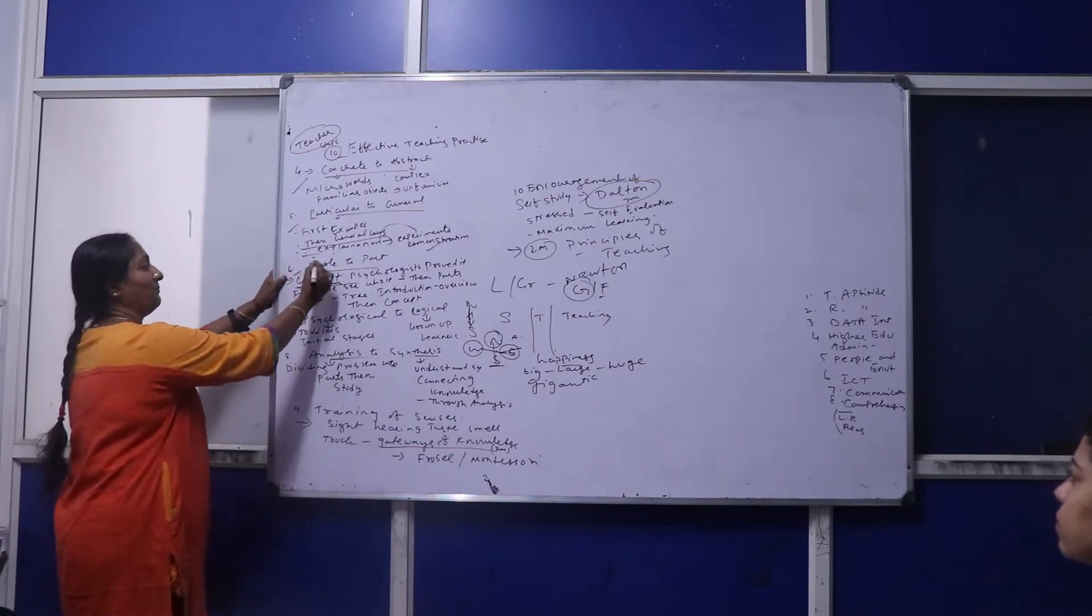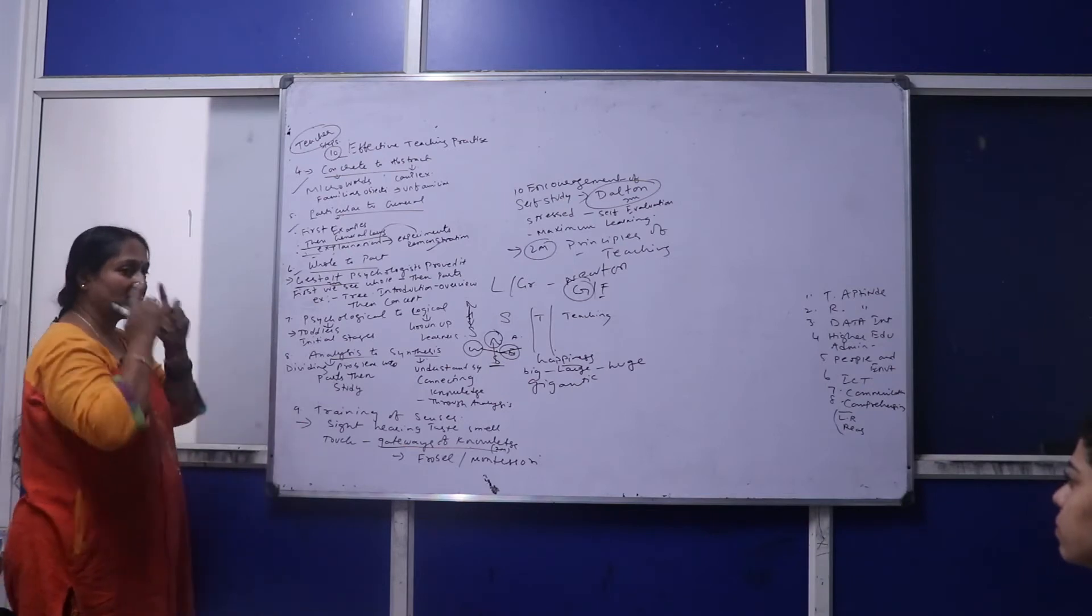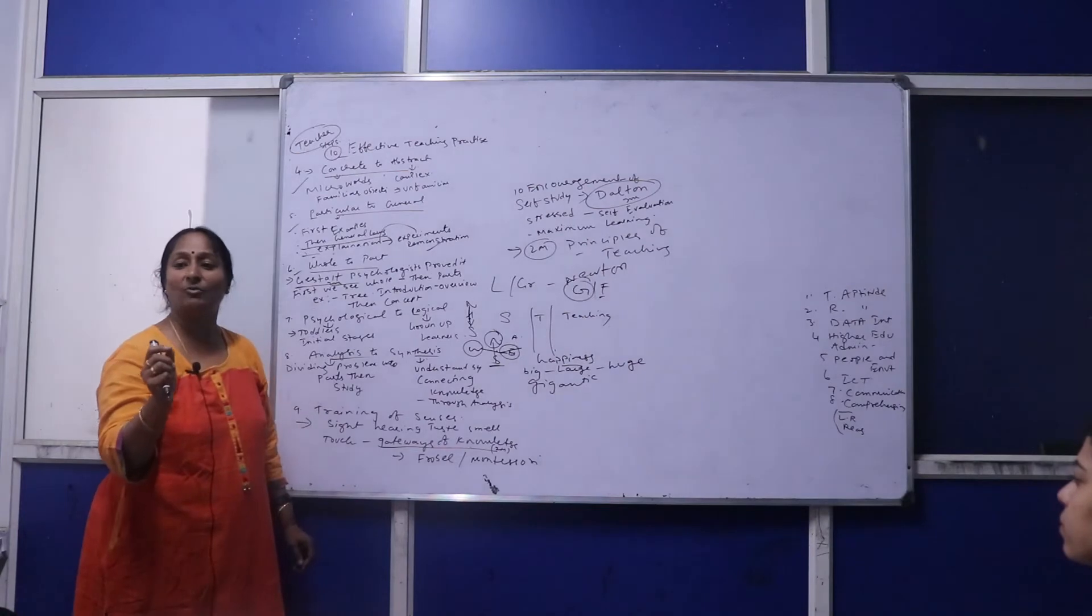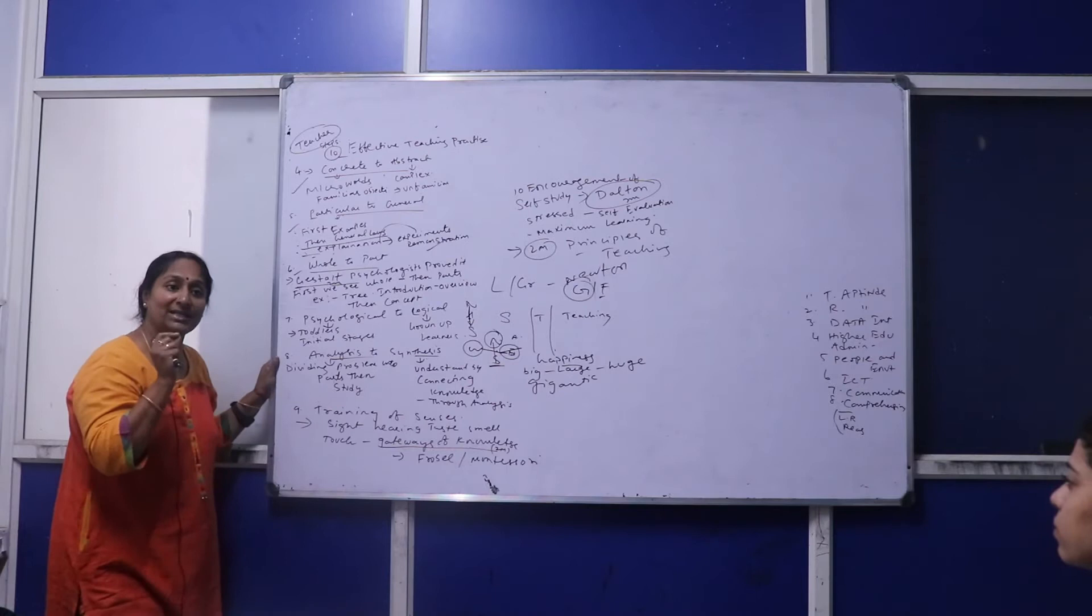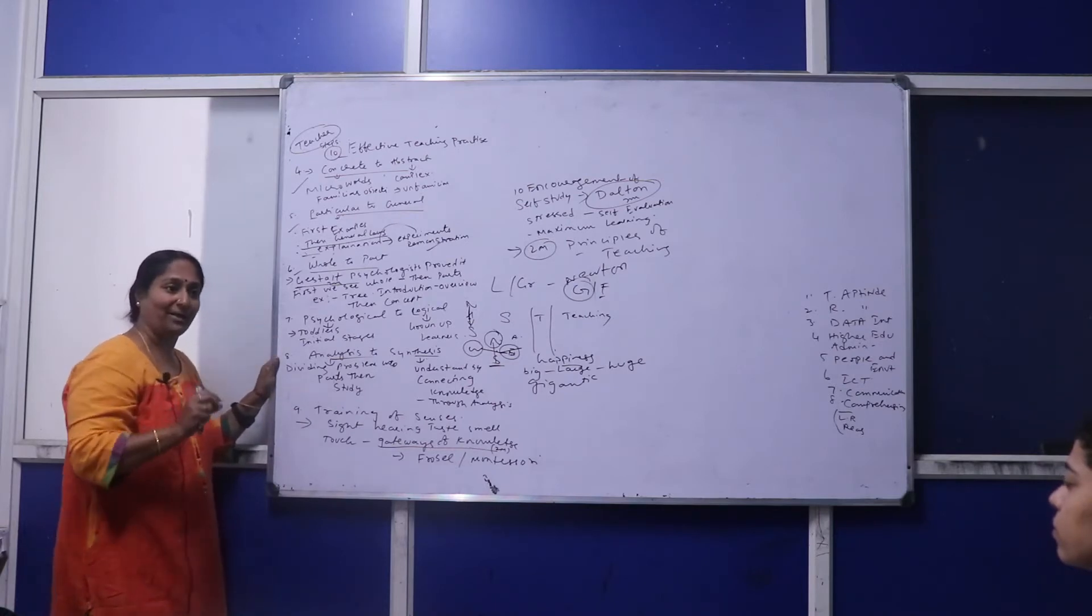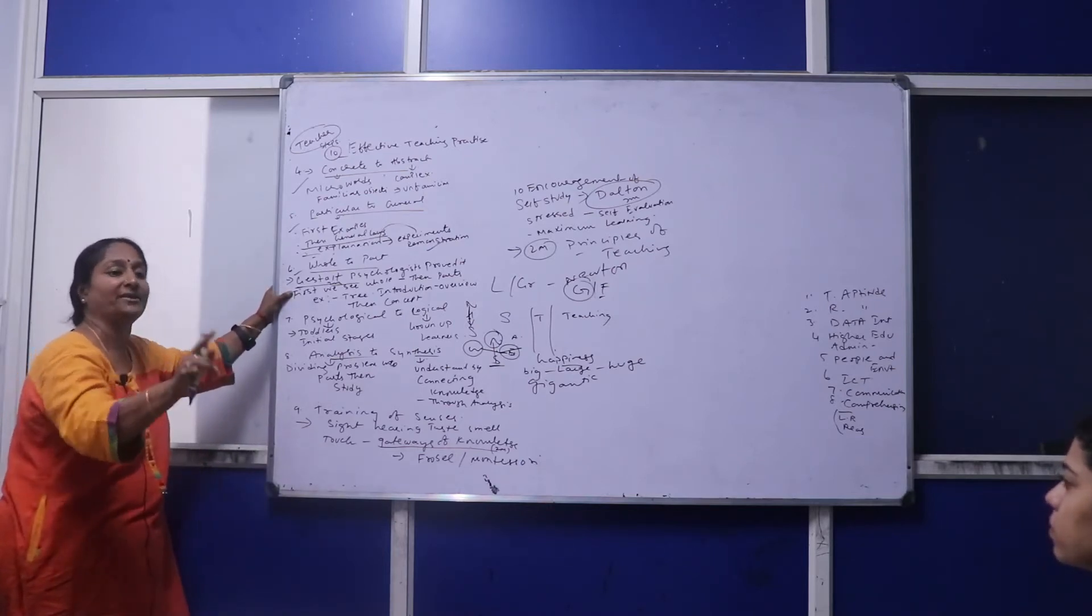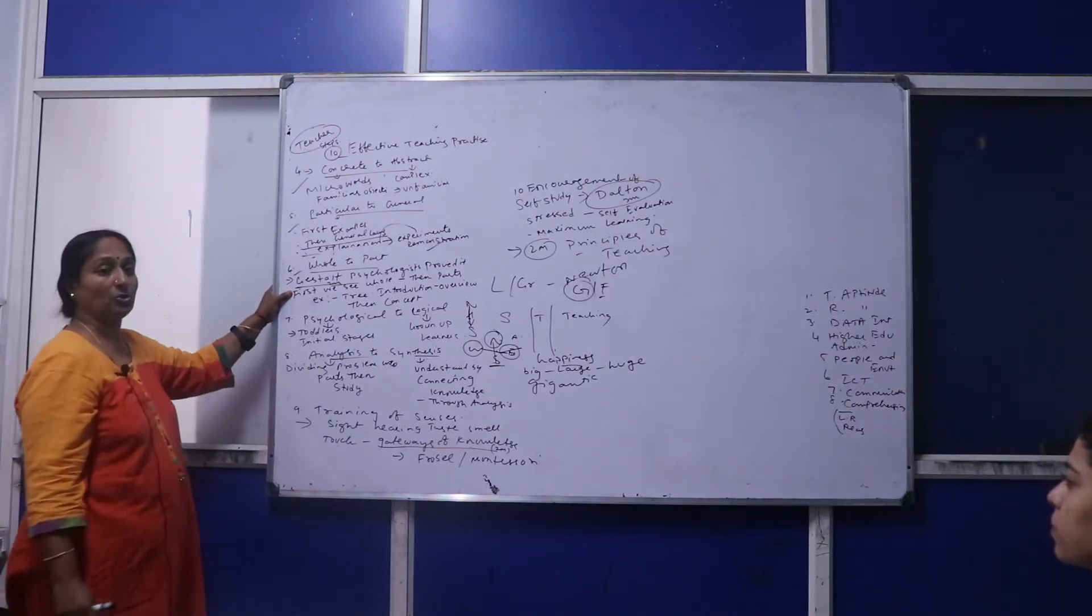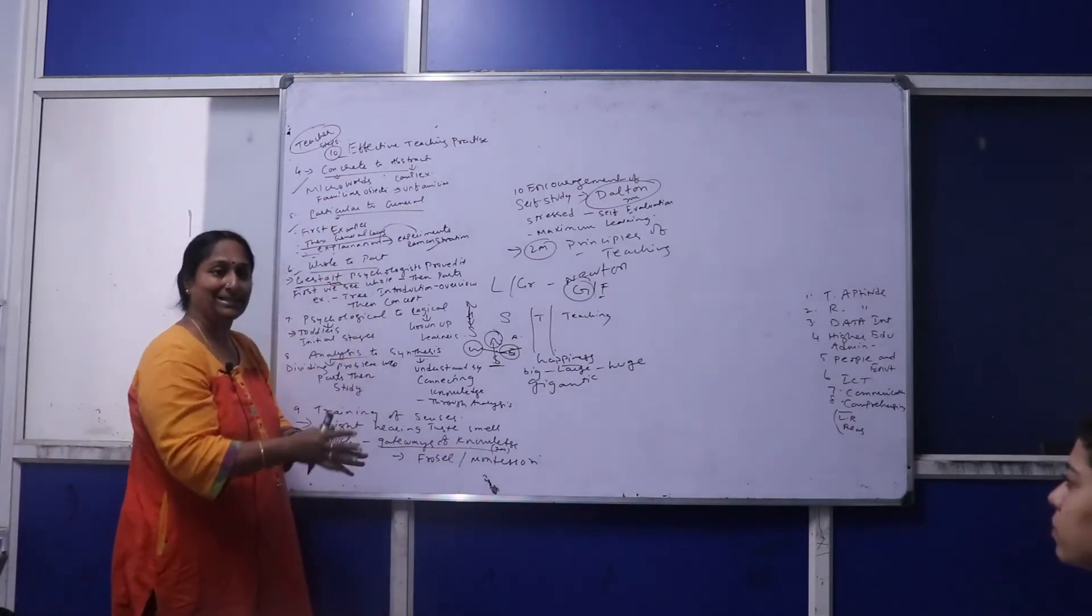Whichever class it is, even at PG level, the situation is the same—whole to part. Gestalt psychologists proved that first we see the whole, then only we see the different parts. For example, an eye doctor—can we go only with the eye? No, it's first the whole and then the part. Teachers should first go with the introduction, not suddenly start with the topic. First give the topic, go with the gist of what you're going to do—a skeletal sketch, then allow them to do.